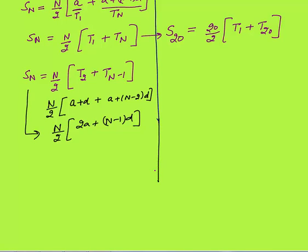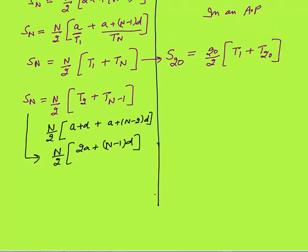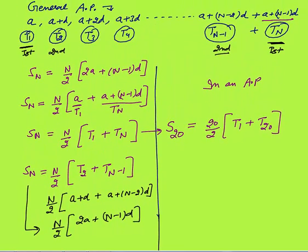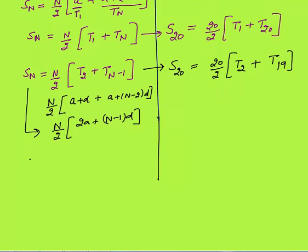This is a very important concept. Not only the first plus last term — the second plus second last term will also give you the sum of first n terms. So if you know the second term from the beginning and the second term from the end, you can calculate the sum. For 20 terms, you could use term number 2 and term number 19. This is applicable for all terms. For example, you can also calculate Sn as n by 2 times t5 plus tn minus 4, where t5 is the fifth term from the beginning and tn minus 4 is the fifth term from the end.